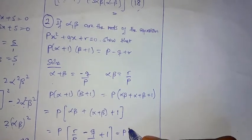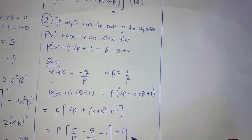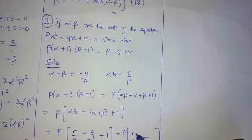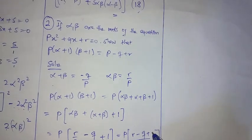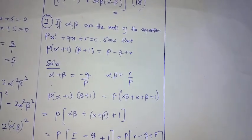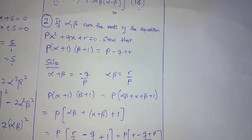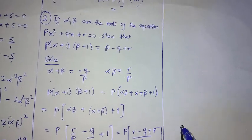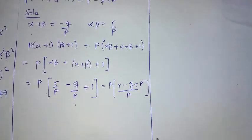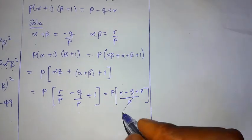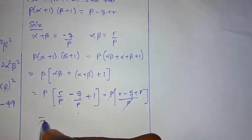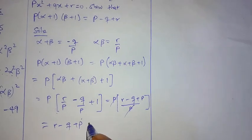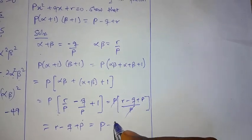Finding the LCM, which is p: this gives p times (r minus q plus p) all over p. The p cancels, leaving r minus q plus p, which is the same as p minus q plus r. This completes the proof.